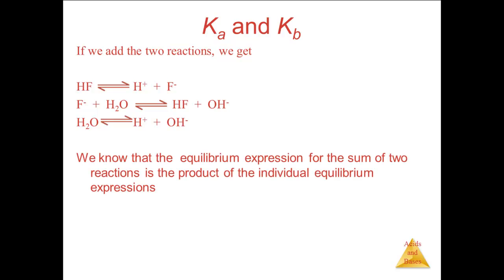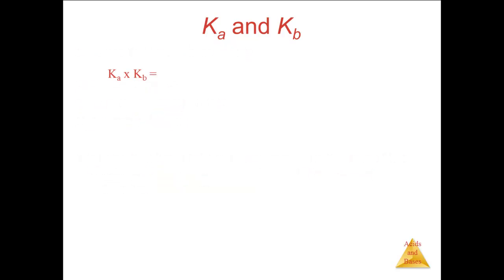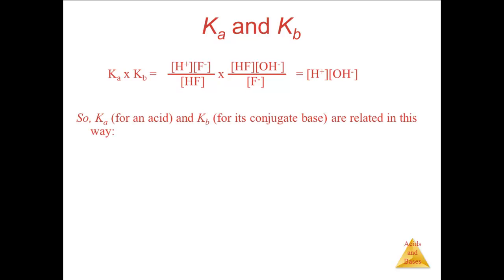The equilibrium expression for the sum of two reactions is the product of the individual equilibrium expressions. So Ka times Kb gives: concentration of H+ times concentration of F- over concentration of HF, multiplied by concentration of HF times concentration of OH- over concentration of F-. The F- and HF cancel, leaving concentration of H+ times concentration of OH-, which equals Kw. So Ka × Kb = Kw, meaning if you know Ka you can calculate Kb, and vice versa.